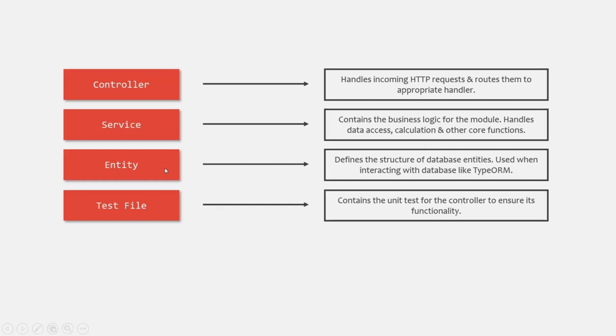The entity file defines the structure of database entities — it is like a model file, so you can have a user model or product model. Just like the entity file, we can also have a schema.ts file. When we work with Mongoose, instead of having an entity, we define a schema based on which we create collections in MongoDB. So when working with MongoDB using Mongoose, we will have a schema.ts file. But if we are working with an ORM like TypeORM, in that case we will have an entity file, which acts as a model file.